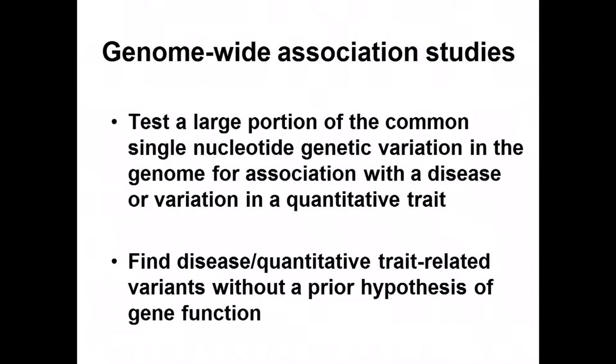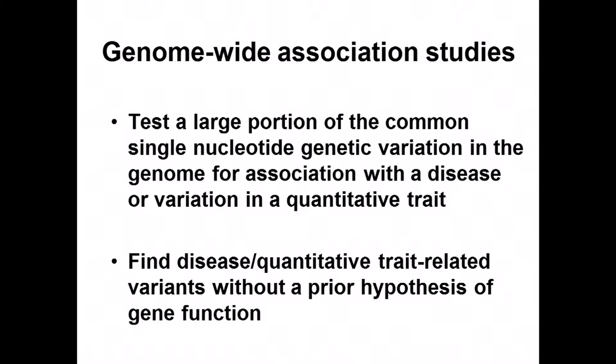The principle of genome-wide association studies, which we'll discuss a lot today, is to look at a large proportion of the variation across the human genome and look for alleles at variants that are associated with a risk of disease or variation in a quantitative trait. The overall strategy is unbiased with respect to what the function of those alleles and genes might be.